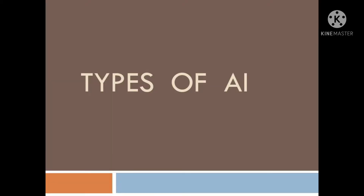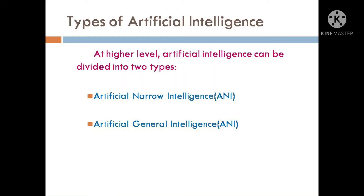There are different types of Artificial Intelligence. At a higher level, Artificial Intelligence can be divided into two types: Artificial Narrow Intelligence and Artificial General Intelligence.